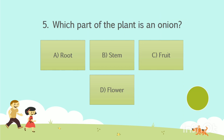Question No. 5: Which part of the plant is an onion? Option A: Root. Option B: Stem. Option C: Fruit. Option D: Flower. Your time starts now. The answer is Option B: Stem.